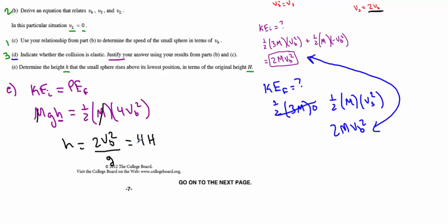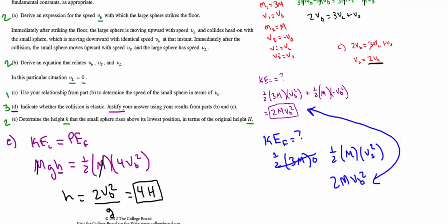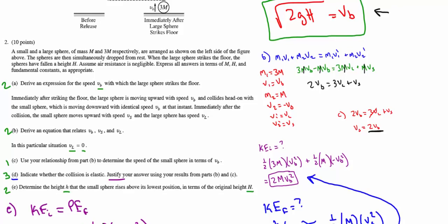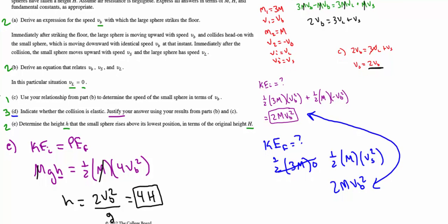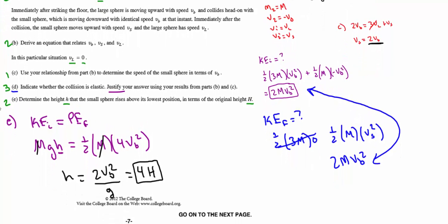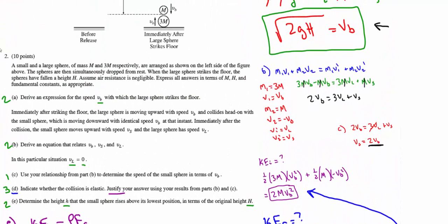The final answer for part E is 4H. Part E was worth 2 points: one for the work shown and one for expressing the answer in terms of H only. This is a 10-point problem — relatively challenging, but manageable if you are comfortable keeping things in terms of variables and remember to express answers in terms of M, H, and fundamental constants. Stay disciplined and go slow.